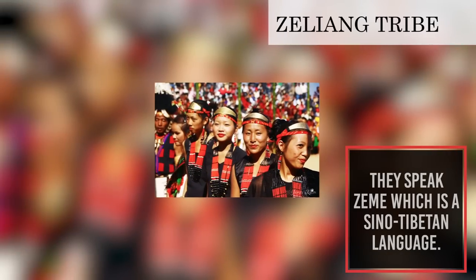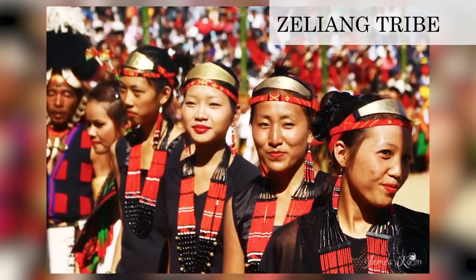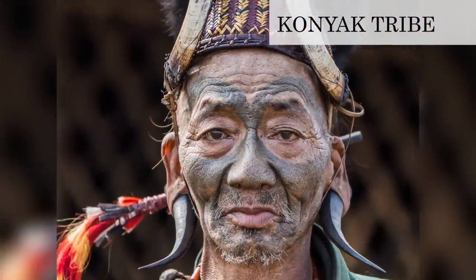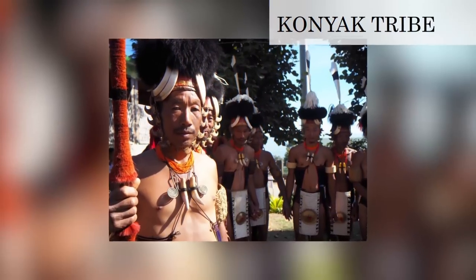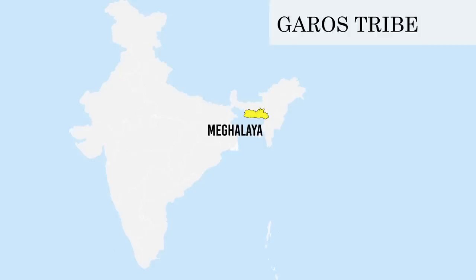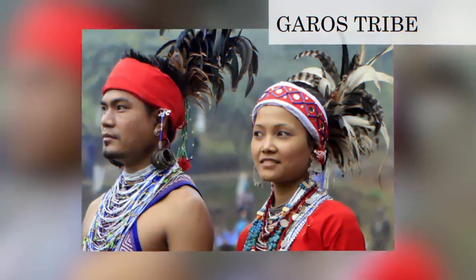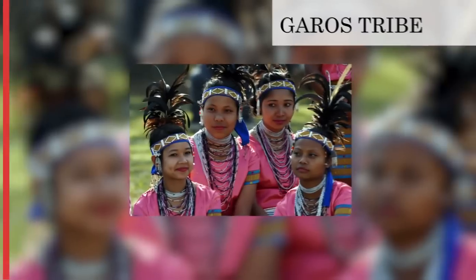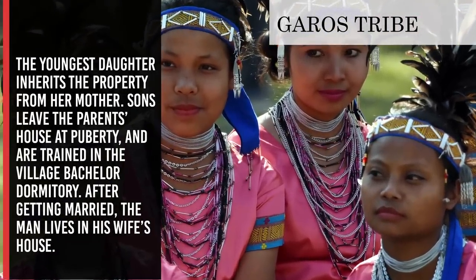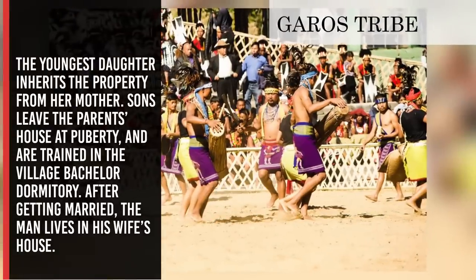The Zelyang speak Zemi, which is a Sino-Tibetan language. Konyak Tribe: they are the largest of the 17 officially recognized tribes in Nagaland. They are known as violent headhunters with tattooed faces, but now they practice agriculture and hunt seasonally. Koros Tribe: they are the second largest tribe in Meghalaya and comprise about a third of the local population. The youngest daughter inherits property from her mother, and sons leave their parents' house at puberty and are trained in the village bachelor dormitory.